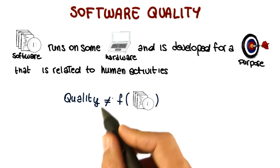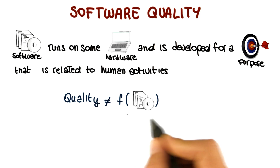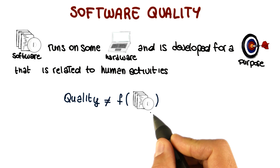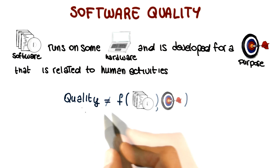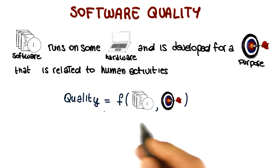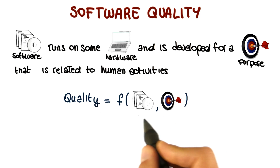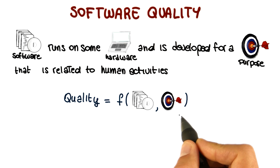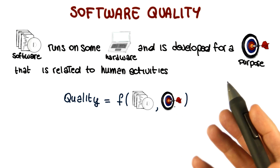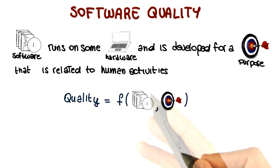Software quality is not just the function of the software itself — the software alone does not define the quality of the overall system. Rather, software quality is a function of both the software and its purpose, where purpose has to do with the way in which the software will be used.